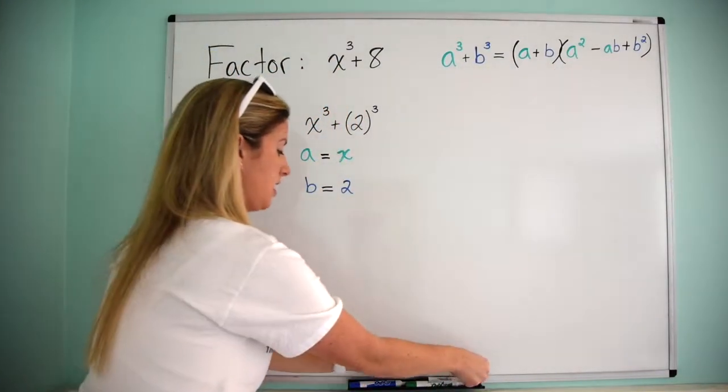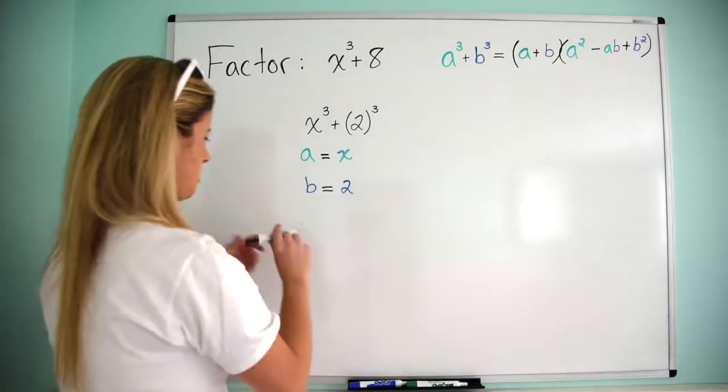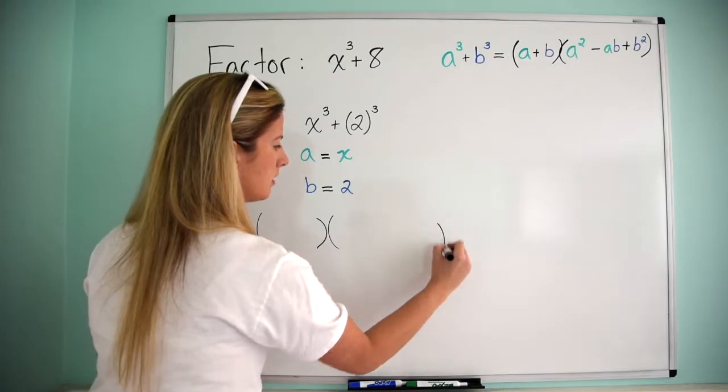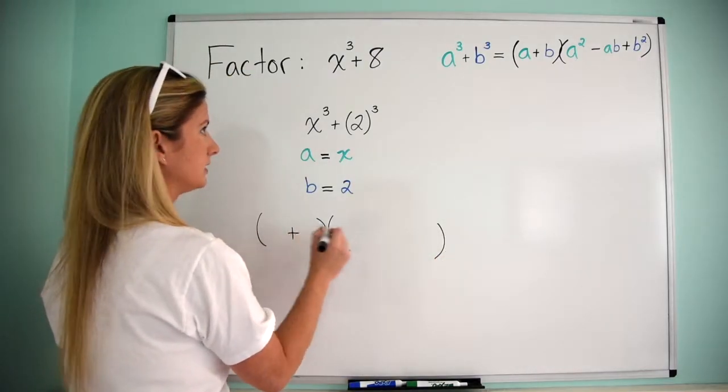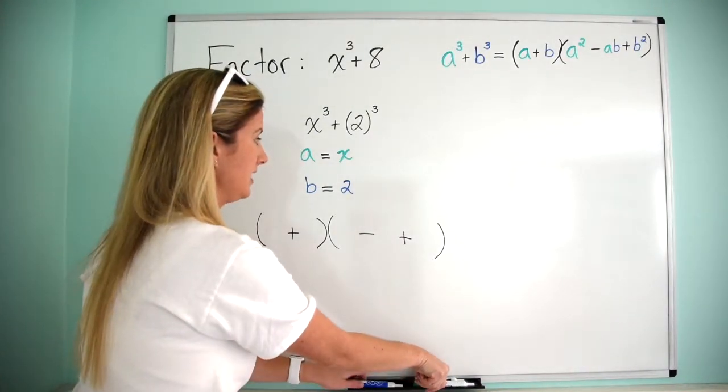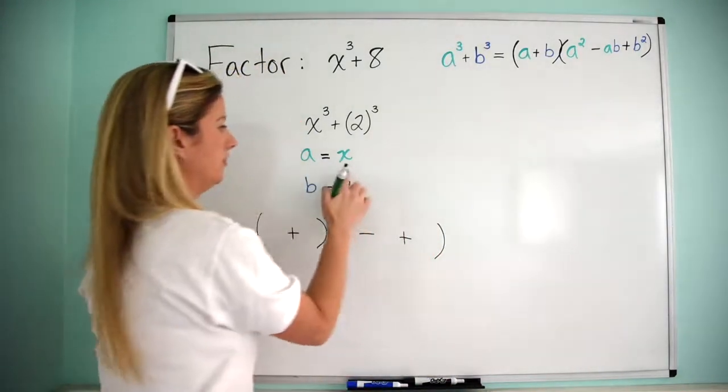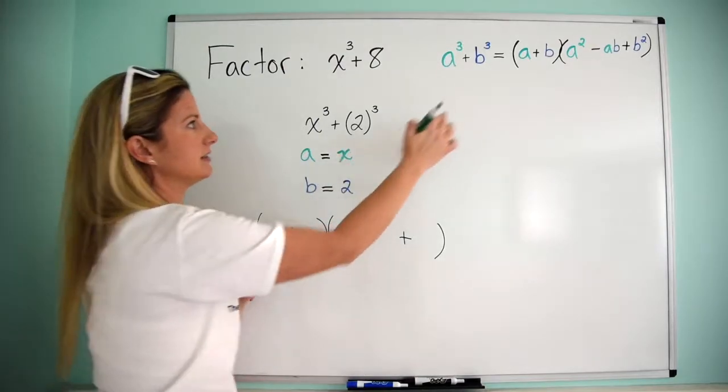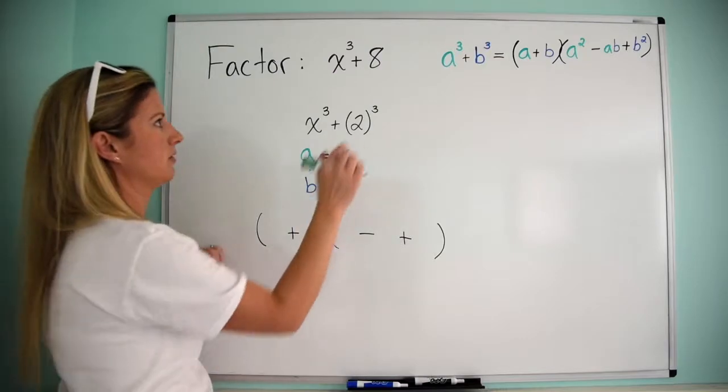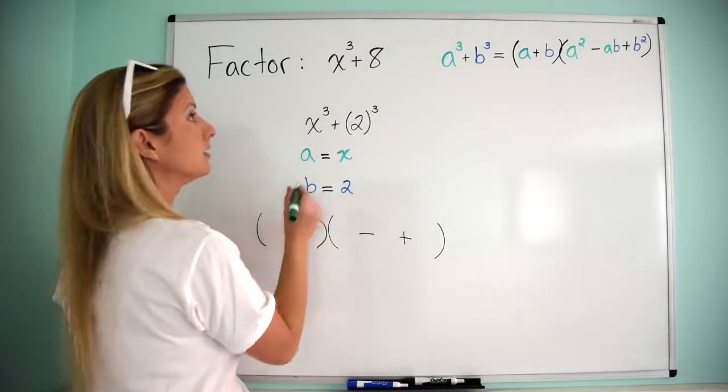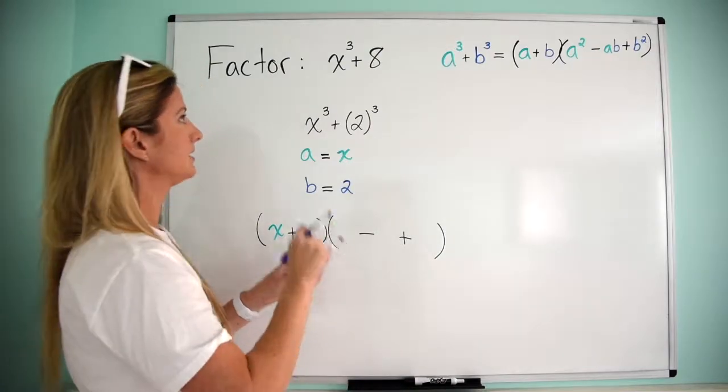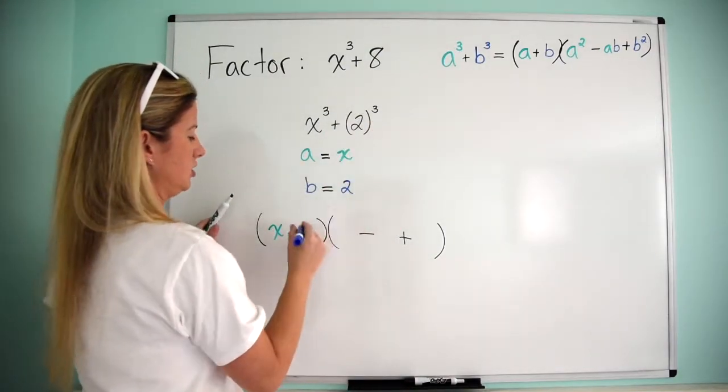So, all we're going to do is we're going to say, all right, this isn't too bad. I know it's going to be a binomial and then a trinomial, and I know it goes plus, minus, plus. And then, wherever I see an a, I'm going to put x, and wherever I see a b, I'm going to put two, and I literally just fill it in. So, it goes a, let me see, so that's going to be x. And then, plus b, which in this case is two.